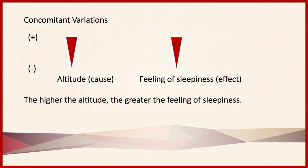The fourth method is concomitant variations. With concomitant variations, the independent variable being tested is present across all cases — in that respect it's similar to agreement. However, what makes it different is that the independent variable exists to different degrees across the cases. We look for whether the effect also changes in degrees corresponding to changes in the independent variable. In this example, as altitude increases, the feeling of sleepiness also increases, providing evidence that increased altitude makes people feel more sleepy.